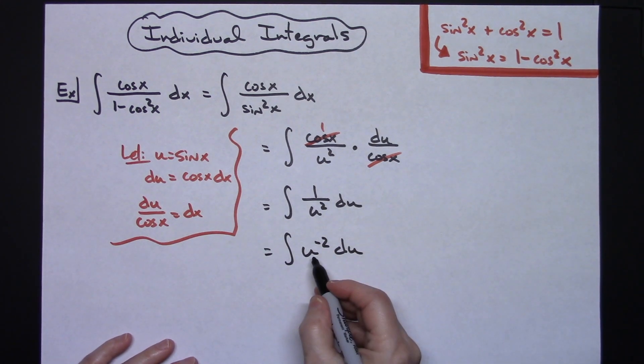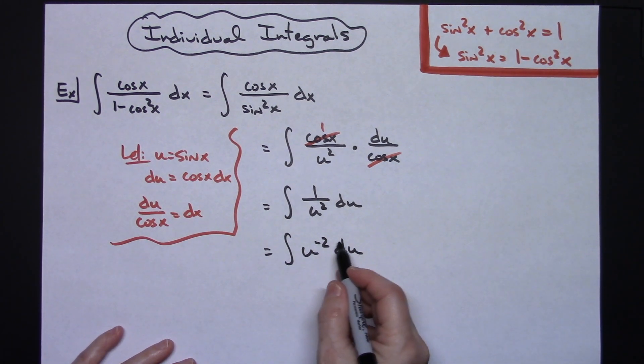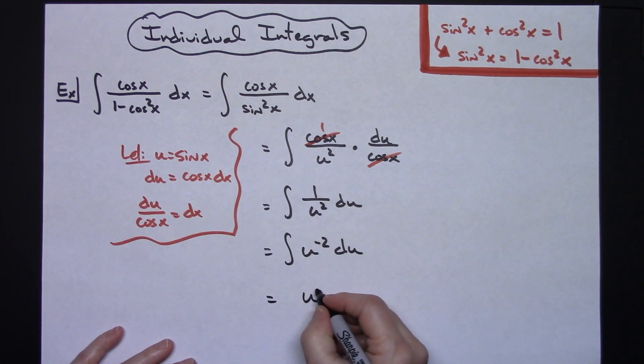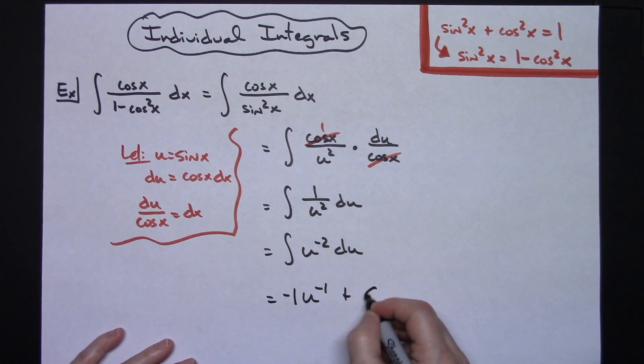So now I can actually integrate here. Adding 1 to that exponent there I'll have u to the minus 1. Bringing it down in front I'll have a minus 1 and then plus c.